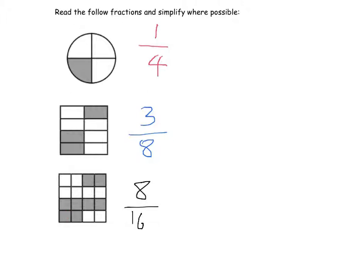Now we can simplify this. We could halve both of these to two, which makes four eighths. We could do it again, which makes two over four. We could halve it again, which makes one over two. So if we keep dividing by two, we can get to the simplest fraction of one half.